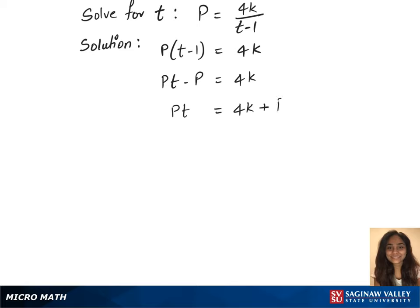In our next step, we will divide p on both the sides, which gives us t equals to (4k + p) over p. We have now solved for t. This is our solution.